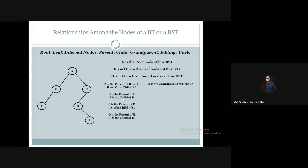Now let us discuss about the grandparent relationship. We can say that A is the grandparent of F and D. Why? Because F's parent is B, and B's parent is A, so A is the grandparent of F. Similarly, D's parent is C, and C's parent is A, so A is the grandparent of D. Vice versa, F and D are the grandchildren of A.